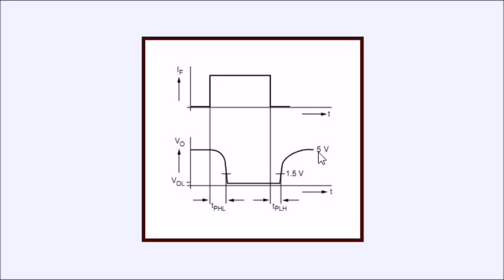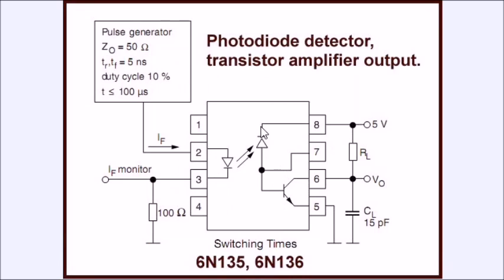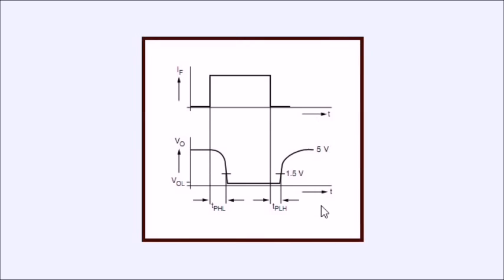The higher the capacitance, the worse this problem is. So by using a reverse bias PIN photodiode in conjunction with a transistor, we can produce, at a high frequency, a fairly good response time.